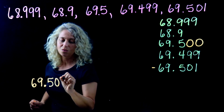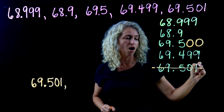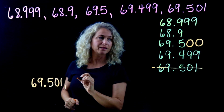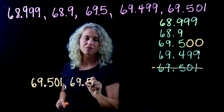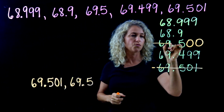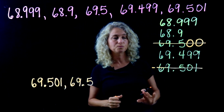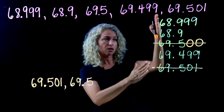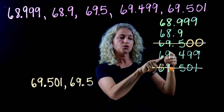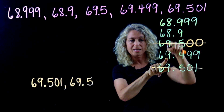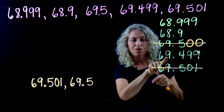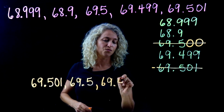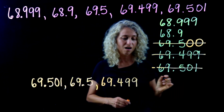So our first number — the greatest — is sixty-nine and five hundred one thousandths. Cross it off. We know our next number is the one we were comparing it with: sixty-nine and five tenths. Cross that off. Now continue with the remaining numbers. The sixes are the same; eight, eight, nine — nine is greater than eight in the ones place, so the next number is sixty-nine and four hundred ninety-nine thousandths. Cross it off.